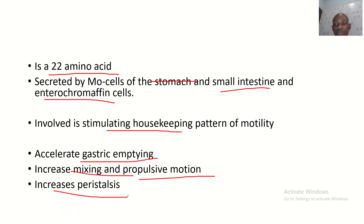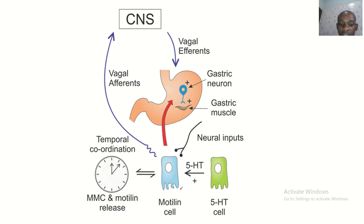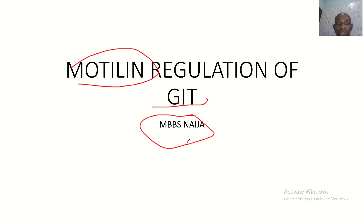Motilin also increases peristalsis — that is, the wave-like movements in the gastrointestinal tract. So the various actions of motilin include gastric motility and protein digestion. That is the role of motilin in regulation of digestion in the gastrointestinal tract.